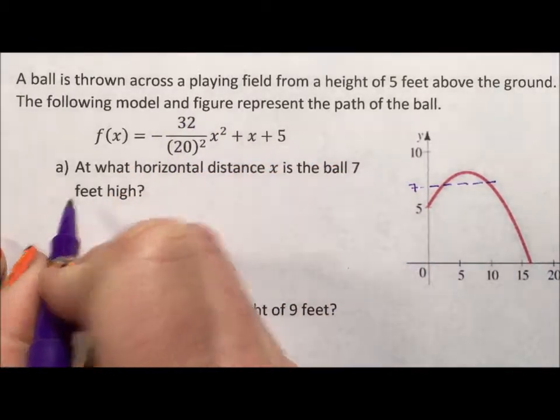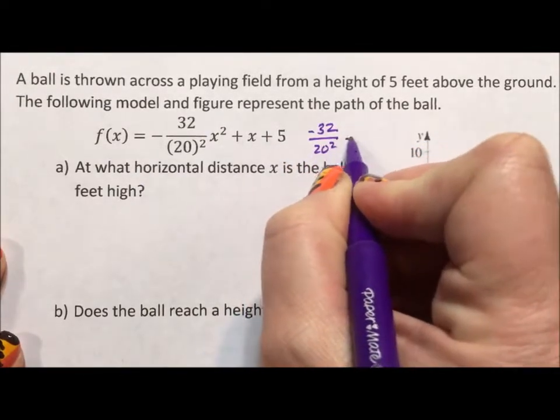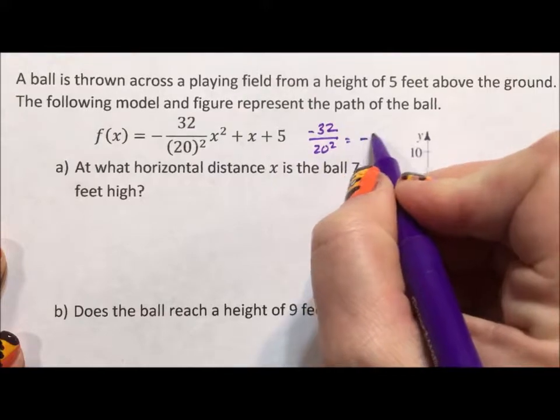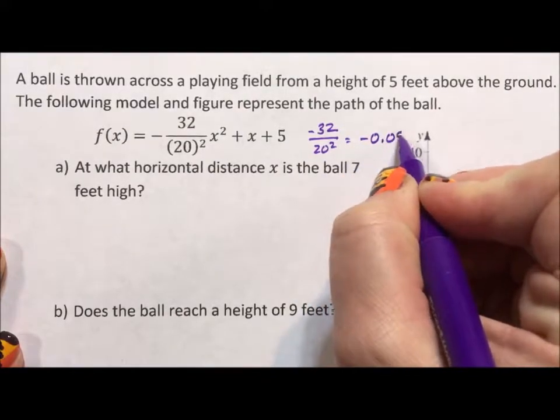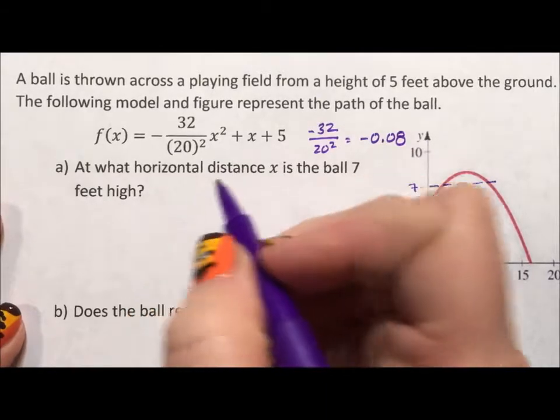this negative 32 divided by 20 squared is equal to negative 0.08. And I'm gonna use that instead of the fraction. That's easier when I'm plugging things into my calculator.